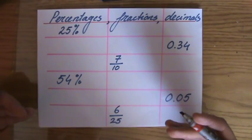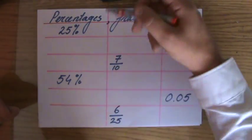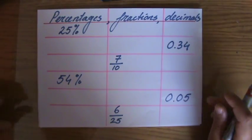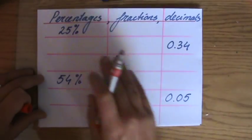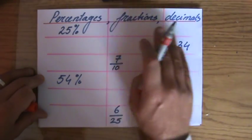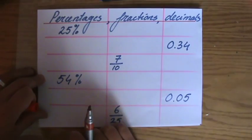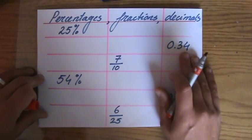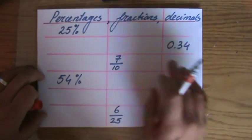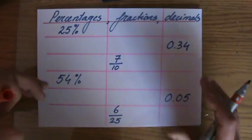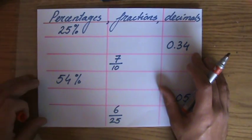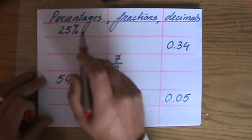Now, I want you to try it yourself first. I know it's nice and pink — I hope it doesn't affect your eyes — but 25%: what is that as a fraction, what is that as a decimal? So complete the table. 0.34: what is that as a fraction, and what is that as a percentage? I'm going to give you my workings now, and I hope you've tried it yourself first.